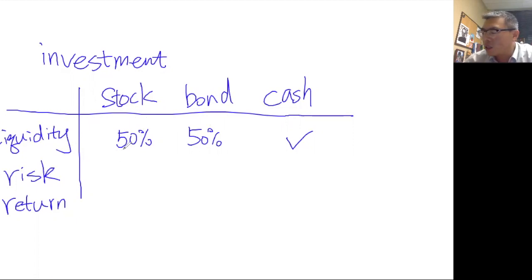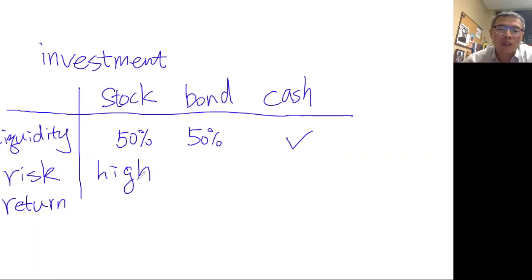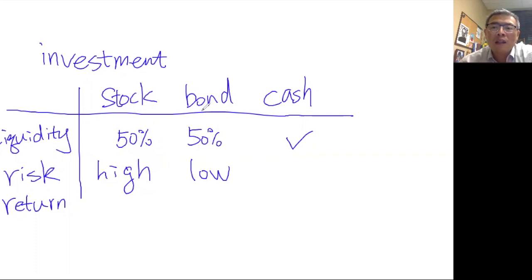In terms of risk, stock has very high risk — the market goes up and down like a roller coaster. We saw major stock market collapses in 2001 and 2008 where stocks dropped very sharply. Bond risk is generally low, especially U.S. government bonds — the U.S. has never defaulted on bonds, despite carrying about $20 trillion in government debt. Cash carries essentially zero risk.